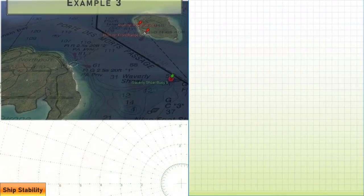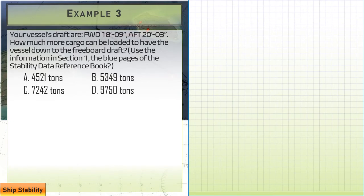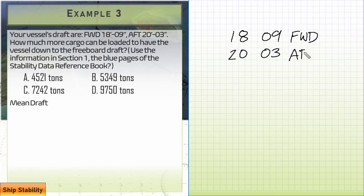Let's take a look at one more. Same idea. We got drafts of FWD 18'-09", AFT 20'-03". And we're looking for how much more cargo we can fit in to get down to the freeboard draft. So again, those magic words freeboard draft. That means you're looking at blue page number one. Same process as before. We're going to find the mean draft first. Looking at 18'-09" forward, 20'-03" aft. That gives us a total of 39 even. That's our combined draft. And we're going to divide by two. Gives us 19'-06".